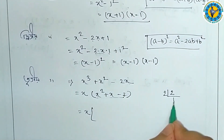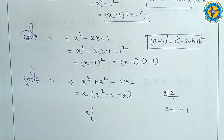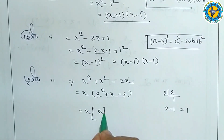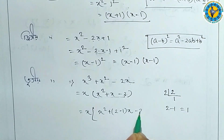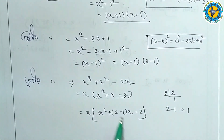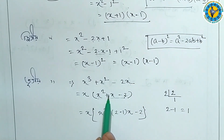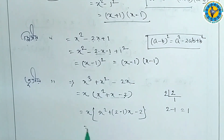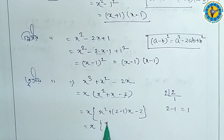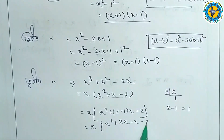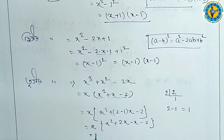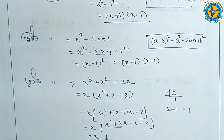2x squared minus 1 into x minus 1. So 2x is equal to x minus 1 into x minus 2, which means x is equal to x minus 1 into x minus 2. So 2x minus x minus 2 is equal to x. The first thing is x is common.